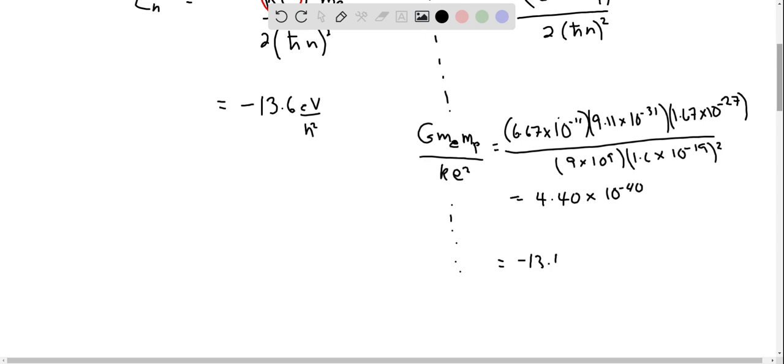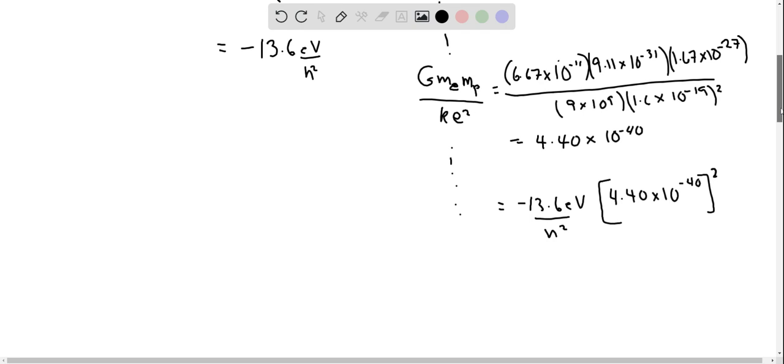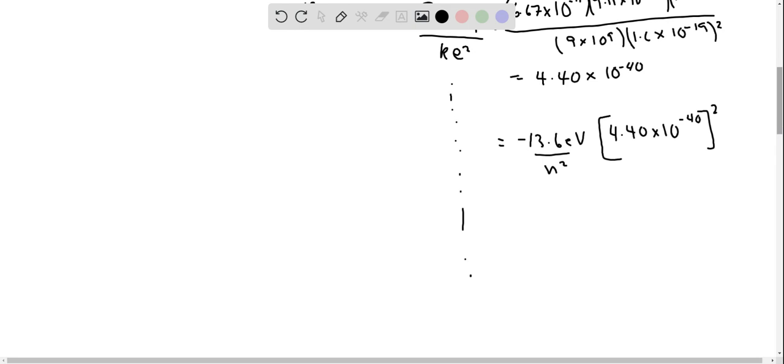So what this means is we can take the minus 13.6 electron volts over N squared and simply multiply it by that cluster of constants and not surprisingly, it is a very much smaller amount. Almost so small, I doubt if there's any way to measure energy differences of that amount. Or those differences would be very long wavelength photons.